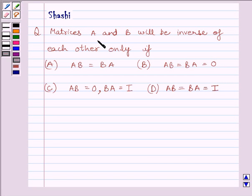The question is: matrices A and B will be inverse of each other only if (A) AB equals BA, (B) AB equals BA equals O, (C) AB equals 0 and BA equals I where I is the identity matrix, (D) AB equals BA equals I where I is the identity matrix.